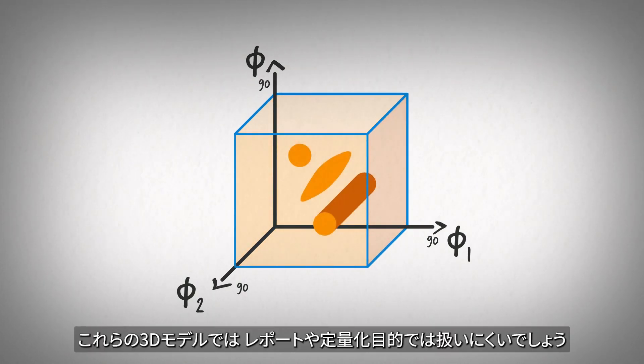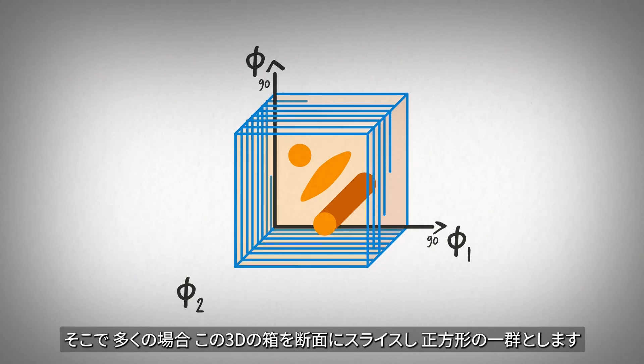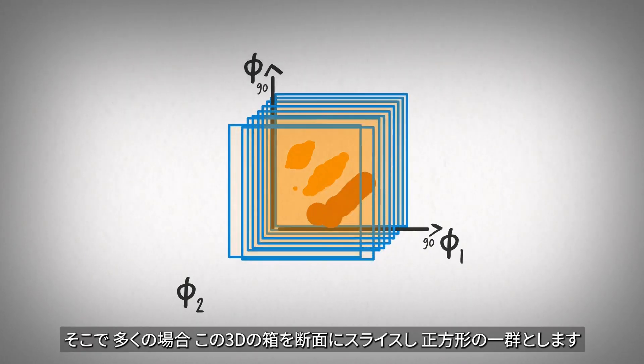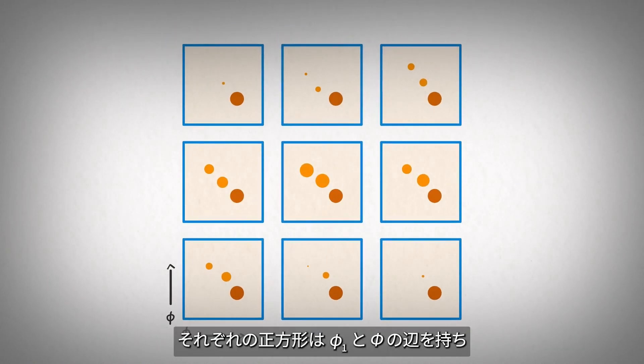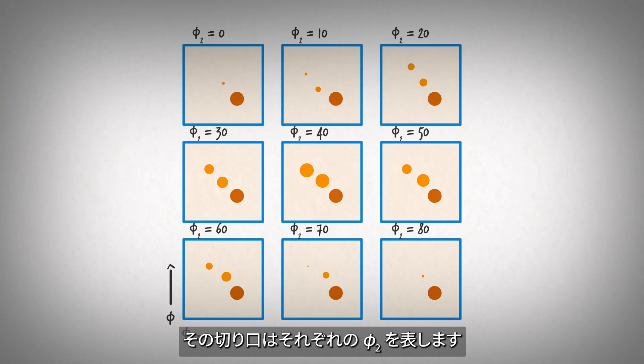It is often hard to use these 3D models in reports and for quantification, so often this 3D box is sliced into sections resulting in a series of squares. Each square has a side of phi 1 and phi, with each cut representing a specific phi 2.